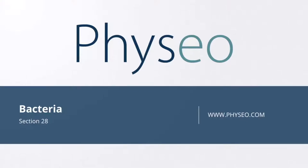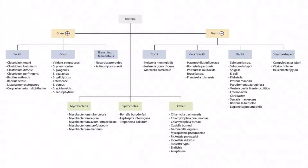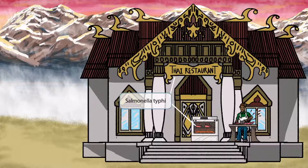Welcome to section 28 of Bacteria. This is our bacteria overview figure, and in this video we'll be discussing Salmonella Typhi. This scene will take place near a Thai restaurant in the mountains of Thailand. This Thai restaurant primarily serves salmon to passing travelers — Thai Salmon Restaurant for Salmonella Typhi.